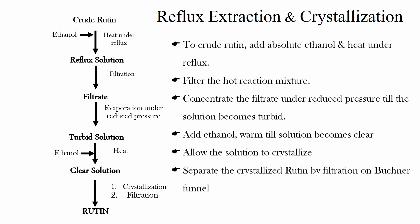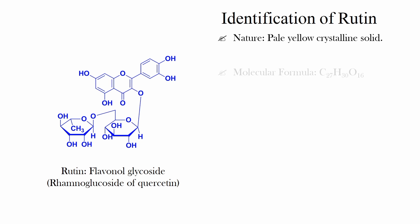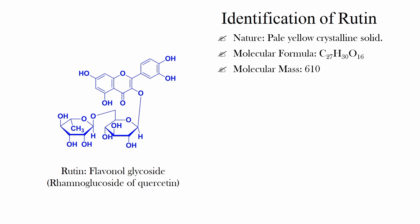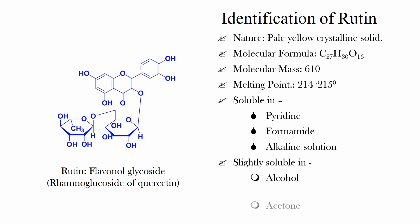This is the isolation of Rutin. Now, identification of Rutin: Rutin is a flavonol glycoside — it is a rhamno-glucoside of quercetin. Rutin is a pale yellow crystalline solid of molecular formula C27H30O16. Its molecular mass is 610 and its melting point is 214–215 degrees centigrade. Rutin is soluble in pyridine, formamide, and alkaline solution. It is slightly soluble in alcohol, acetone, and ethyl acetate.